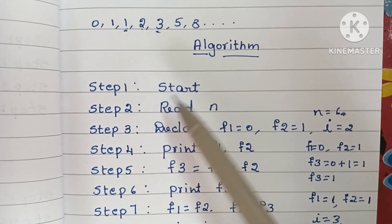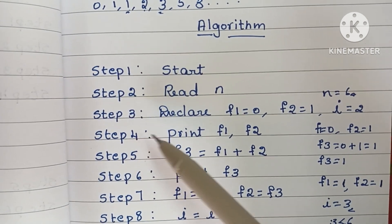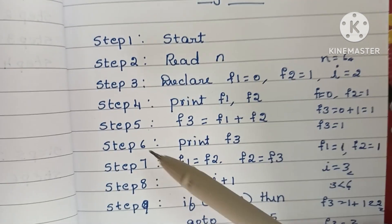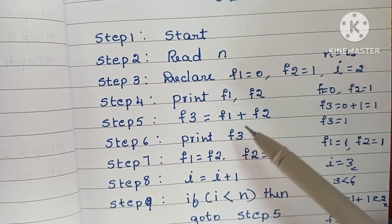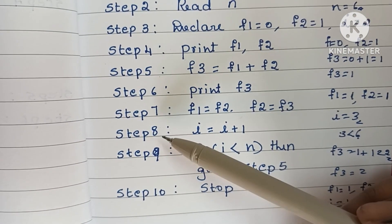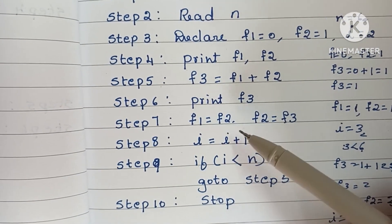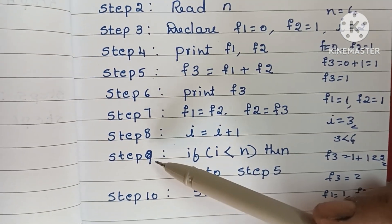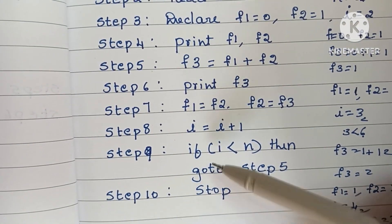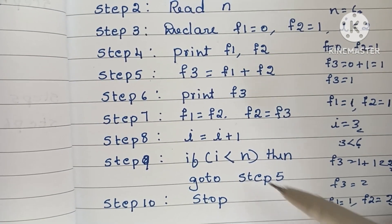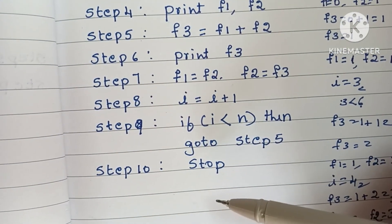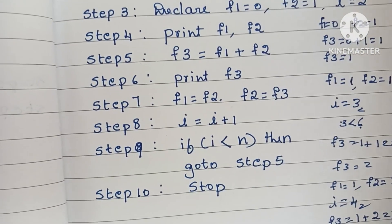To summarize the algorithm: step one is start; step two, read N; step three, declare F1 equal to zero, F2 equal to one; step four, print F1 and F2; step five, calculate F3 equals F1 plus F2; step six, print F3; step seven, interchange F1 equals F2 and F2 equals F3; step eight, increment I equals I plus one; step nine, if I is less than N go to step five, else go to step ten and stop.